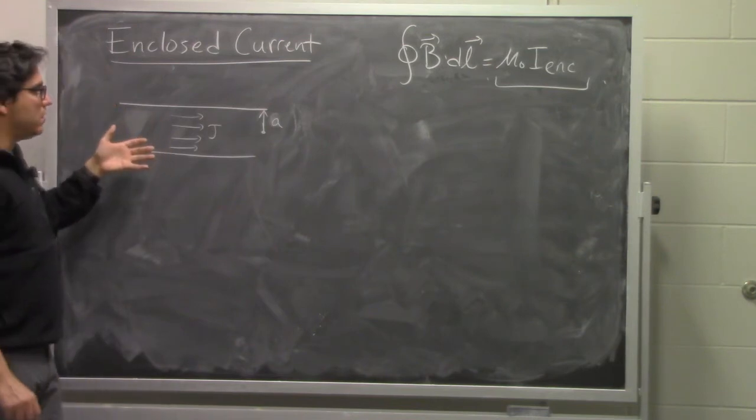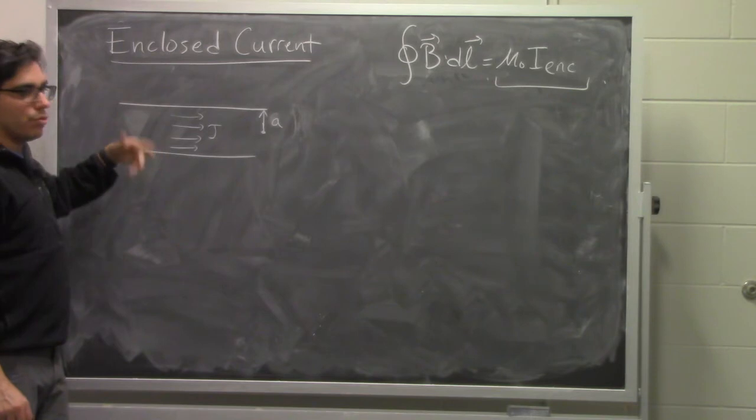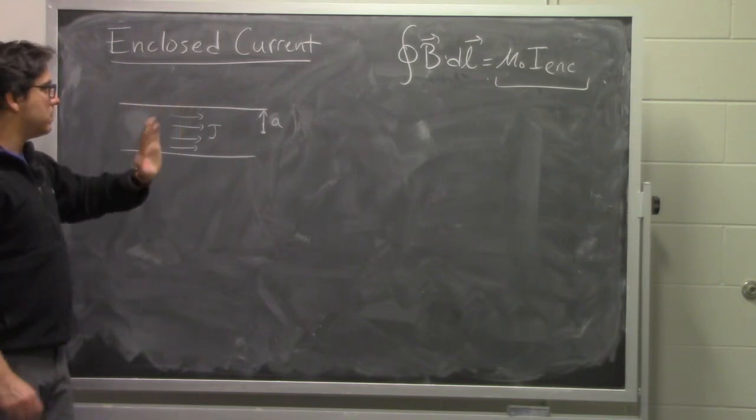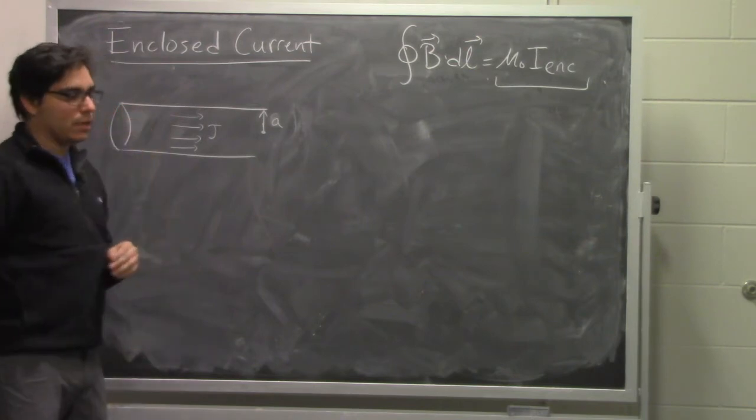So what I have here is a thick wire that has a constant current density running through it. And it's a cylindrical wire, so that means that the cross-section is circular. So it has a circular shape on the end.